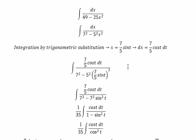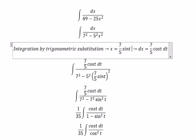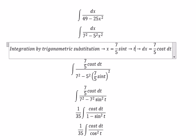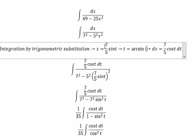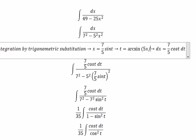We need to change back for x. So we got t equal to arcsin, we divide both sides with 7/5, we got about 5x over 7.